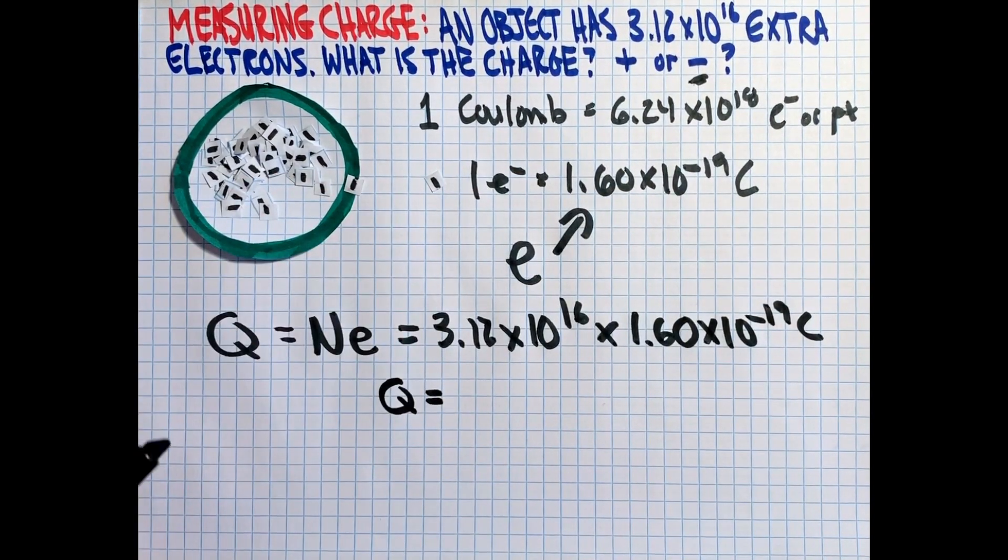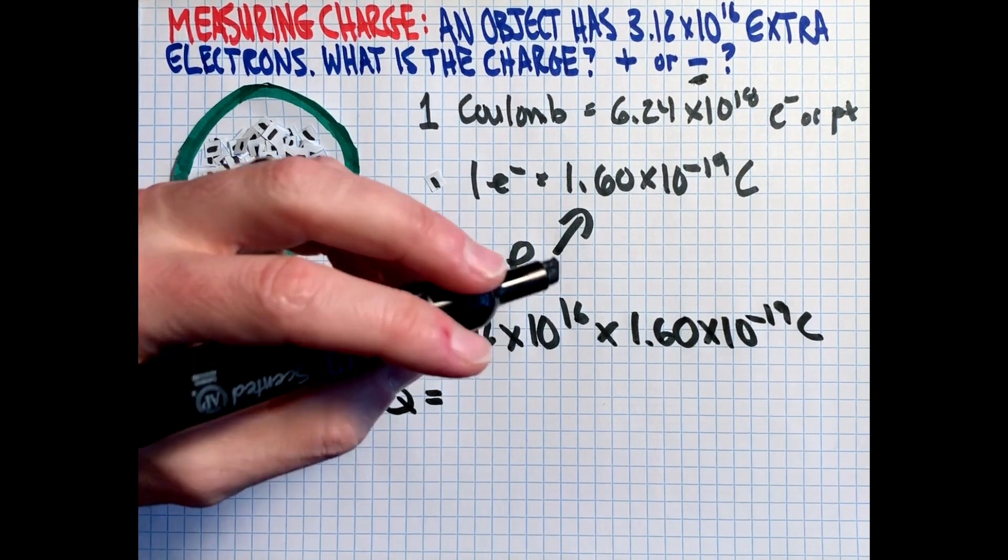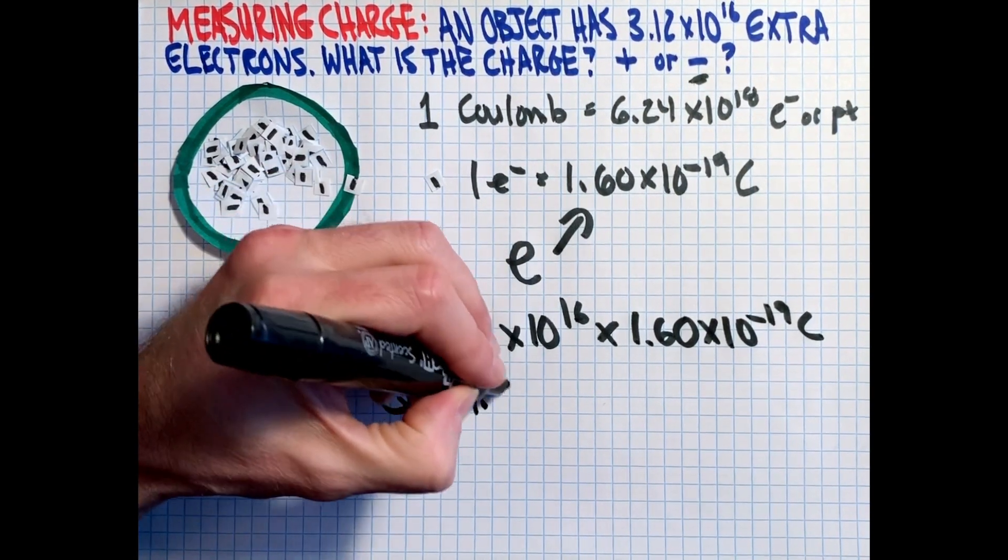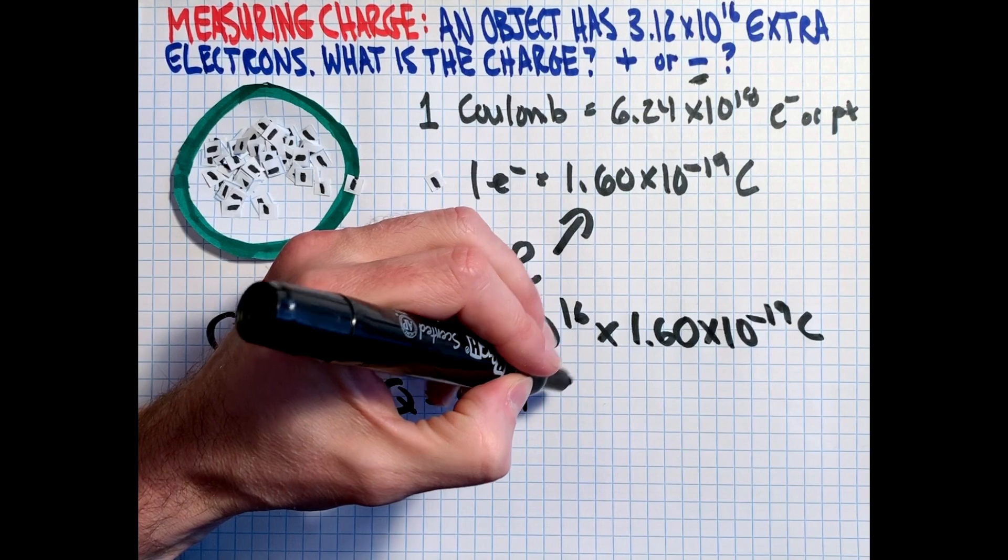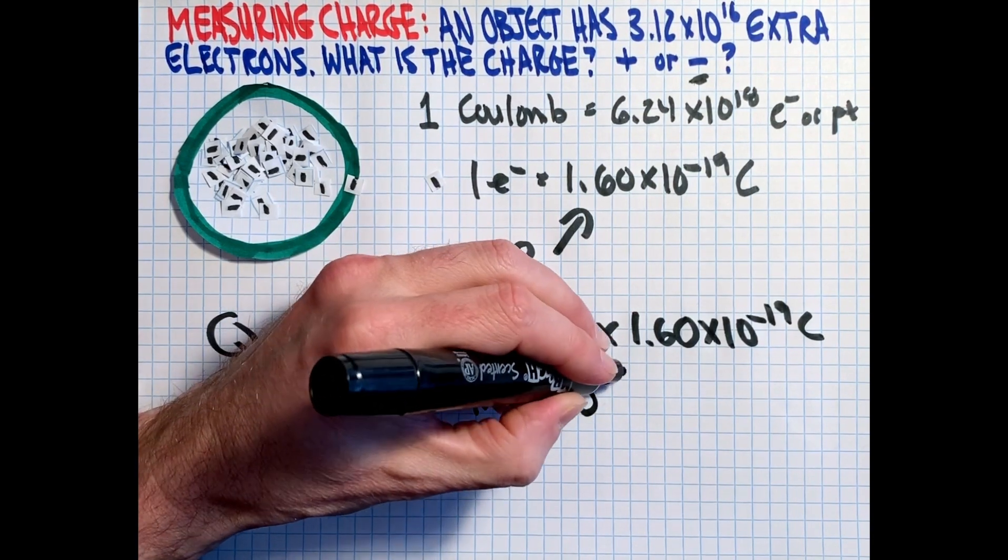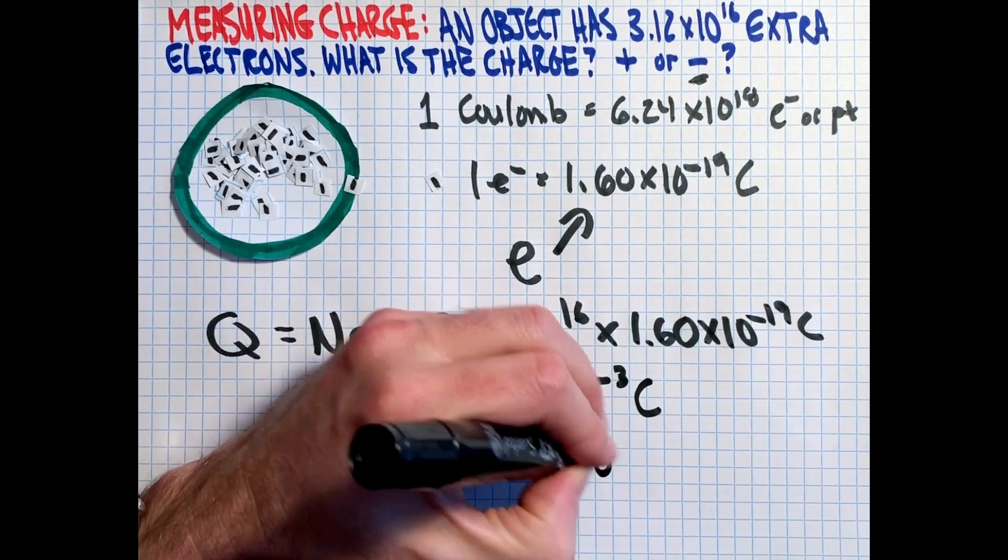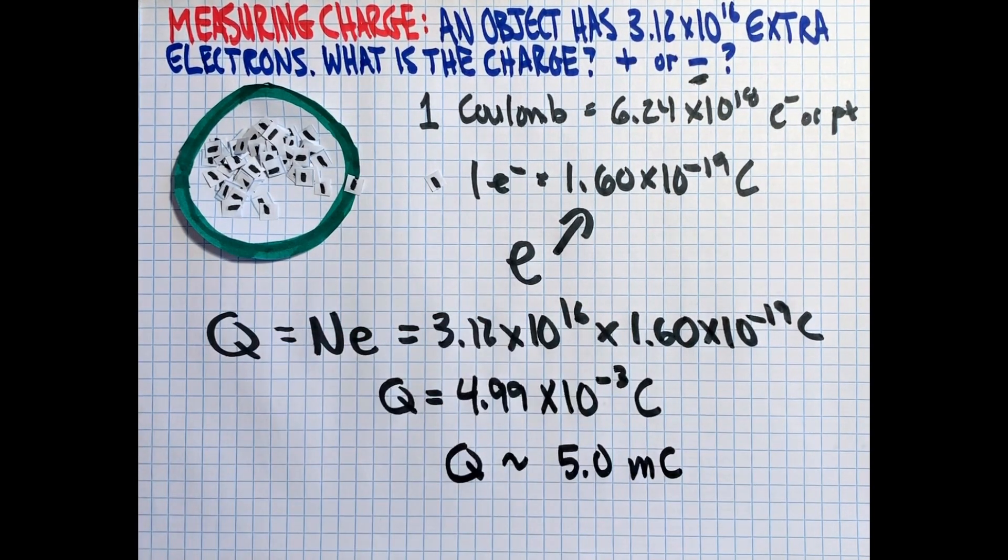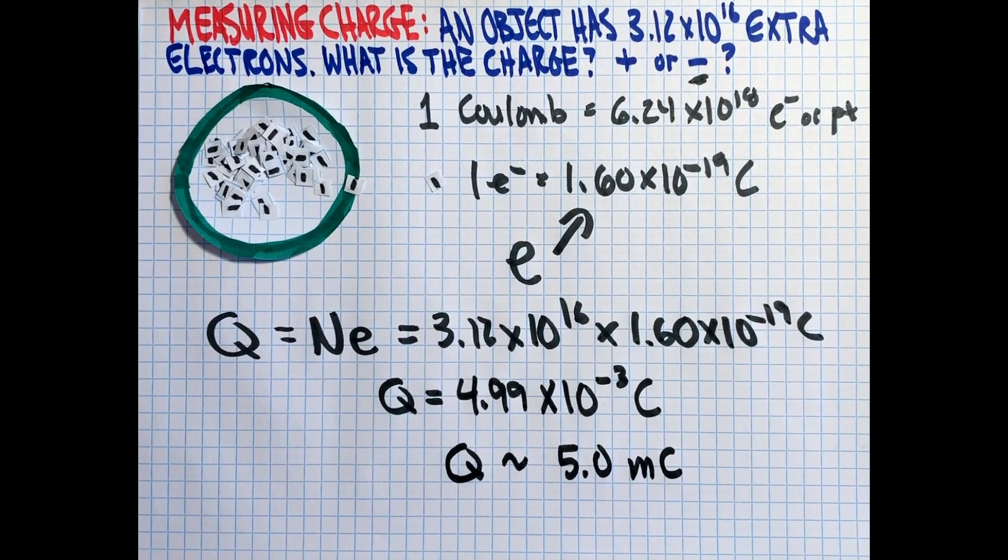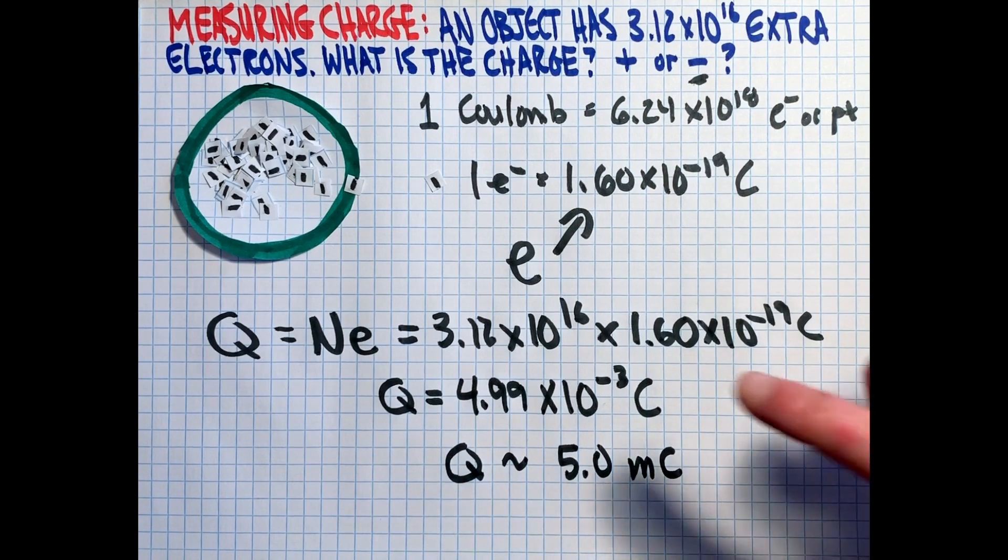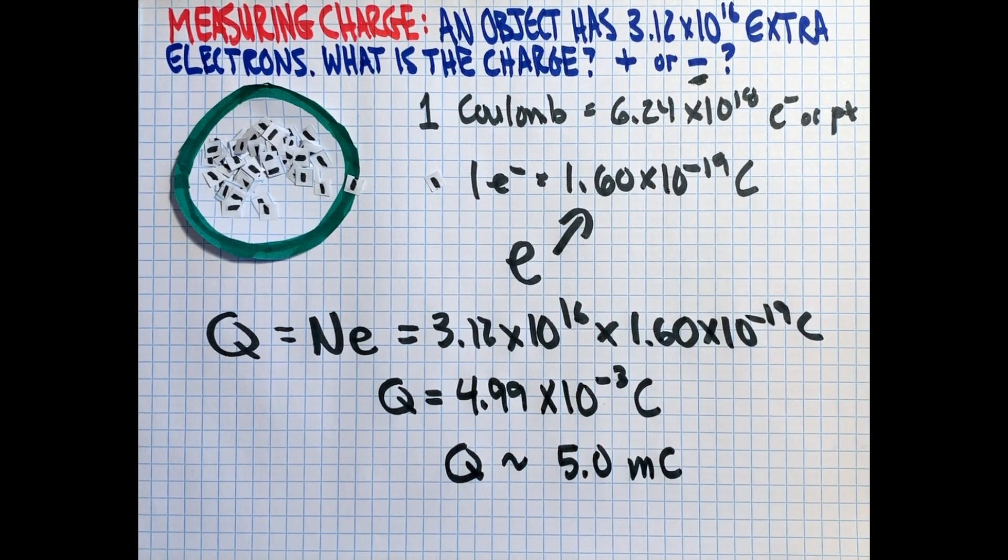And that gives us an answer of 4.99 times 10 to the minus 3 Coulombs or roughly 5 millicoulombs. And so Coulombs are actually, one Coulomb is actually quite a bit of charge. And so a lot of the questions will involve millicoulombs or even smaller. But in this case, you could answer this question either in Coulombs or in millicoulombs.